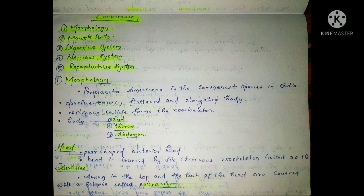First of all, we are going to study Periplaneta americana, which is the most important species studied in India. The body is elongated and flattened. The body is also covered by a cuticle, which is the exoskeleton that covers the body.